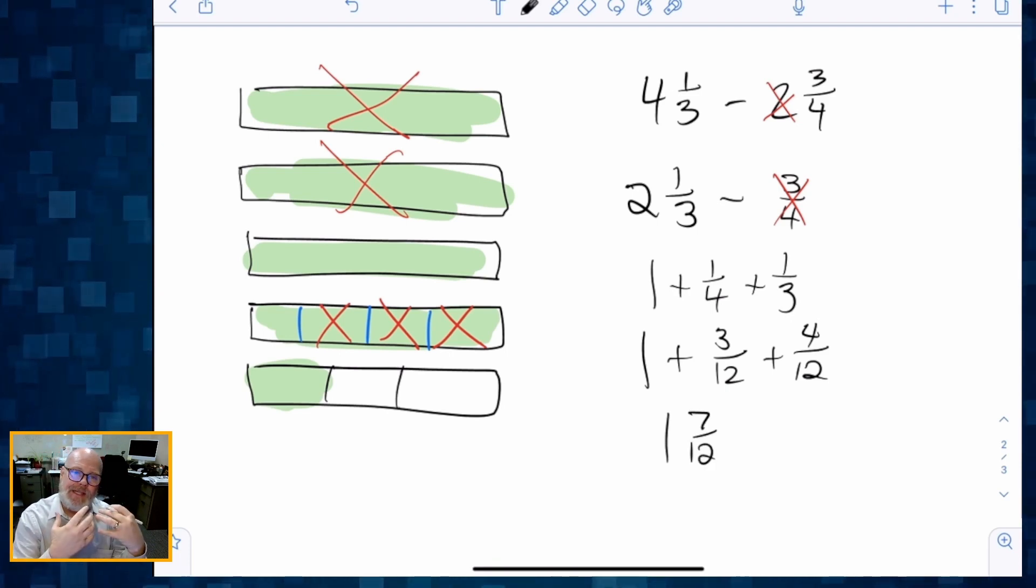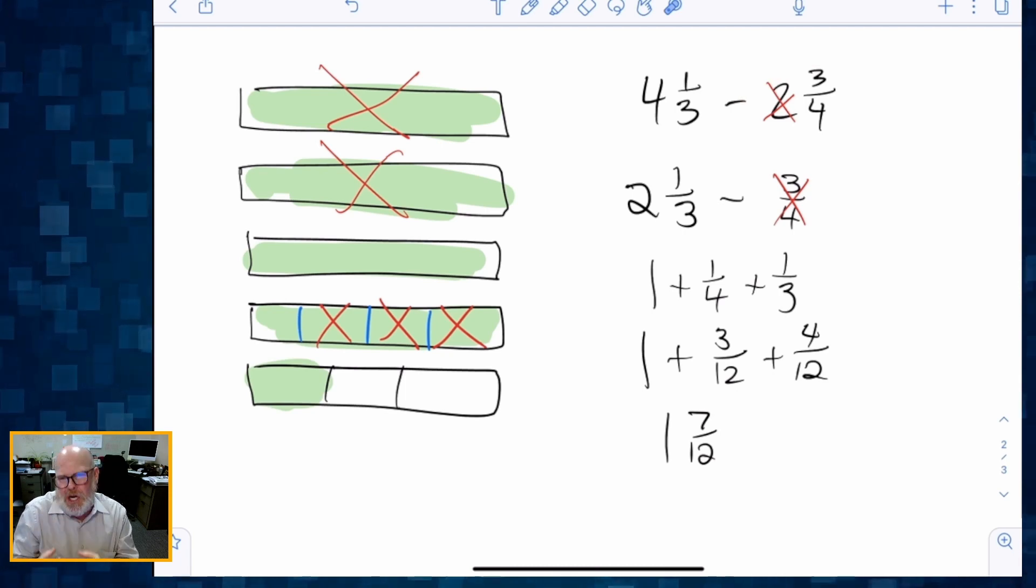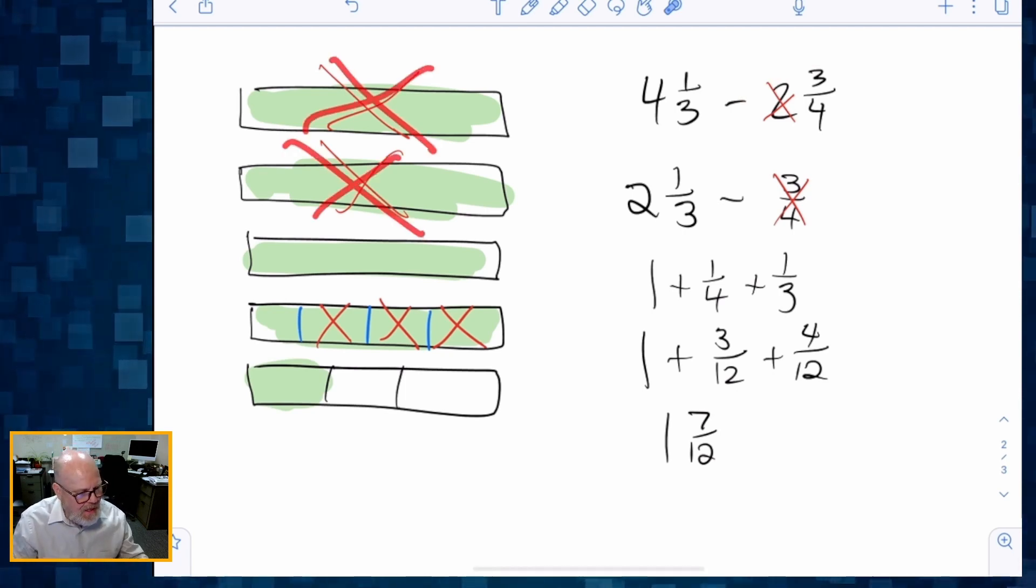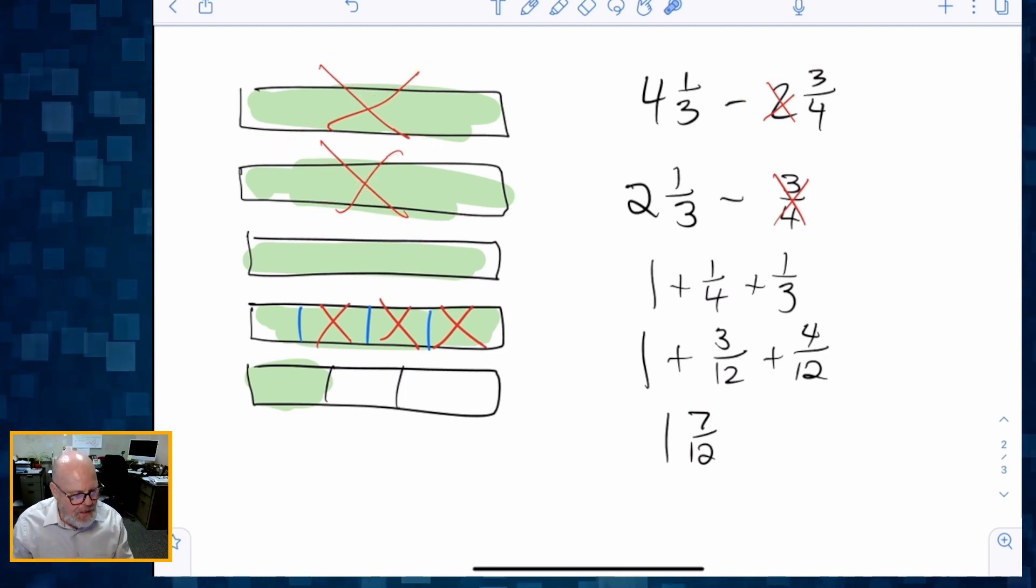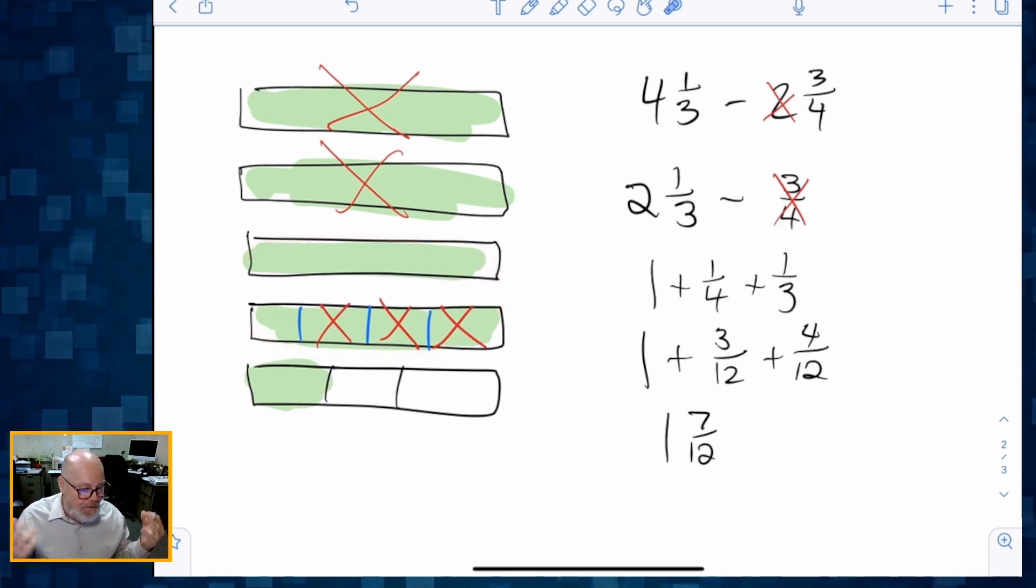So that's using the area or a tape diagram model to represent subtracting 2¾. And we kind of do it in chunks. We begin by crossing off that whole number. And then because we need to cross off that remaining fraction, we just remove that fraction from one of the whole numbers and we're good to go, aren't we?